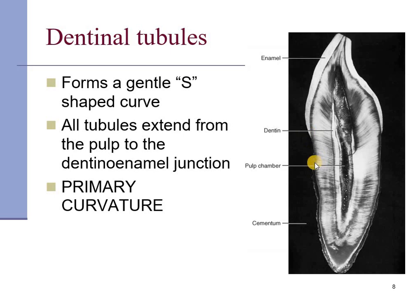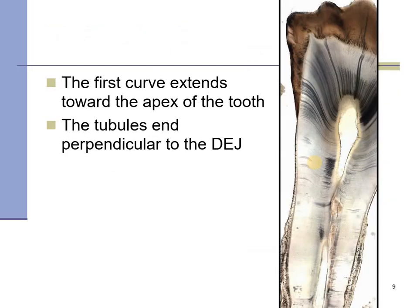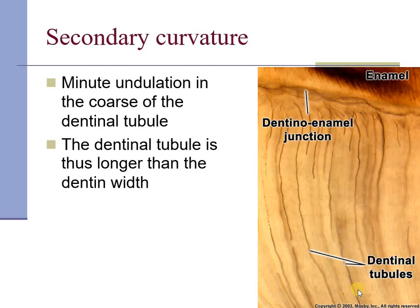All the tubules extend from the pulp in the center to the dentino-enamel junction in the crown and the dentino-cemental junction in the root. These tubules show a characteristic curve where the first convexity is towards the apex of the tooth, and the second convexity is towards the crown. These primary curvatures form small undulations called the secondary curvature of the dentine.